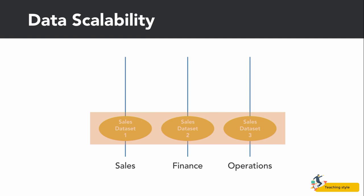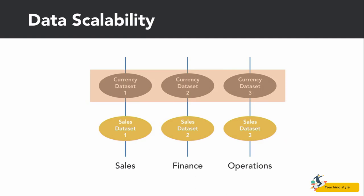A large company has numerous departments, such as sales, finance, and operations. To get insight into the organization's performance in Power BI, they may each analyze sales data but look at different segments of it. They may each obtain their sales data through separate ETL processes, represented by the datasets you see. They also look at global currency exchange rates, but some calculate daily rates and others a monthly exchange rate, represented as another group of datasets.